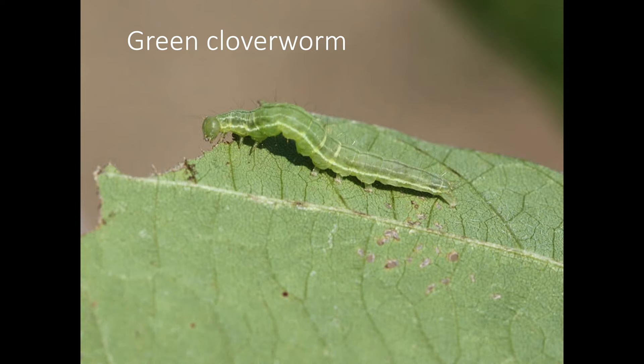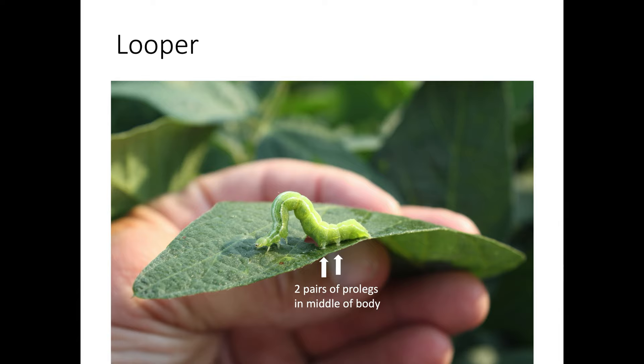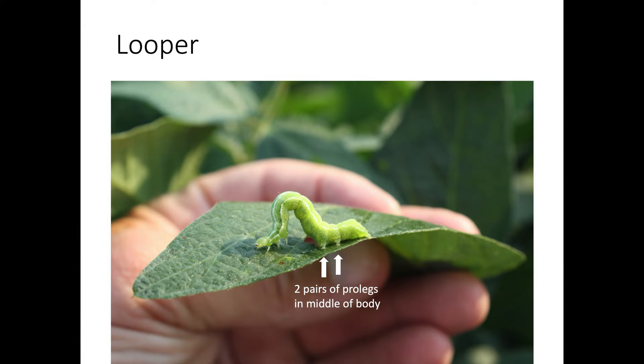Let's look at two of the most common defoliating caterpillars. These insects feed on the leaves of soybean plants. Many different species of caterpillars move in that looping inchworm fashion, so you really can't accurately identify the larvae just by how they move. Both green clover worms and soybean loopers may move in this inchworm fashion, but these pests have very different treatment thresholds, which is why it's important to correctly identify them. Green clover worm is our most common defoliating caterpillar and may be found at any time during the growing season. The caterpillar is green, slender, and gets about one inch long.